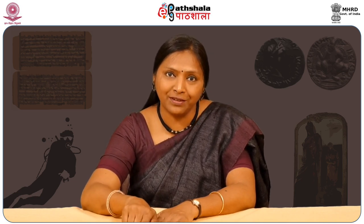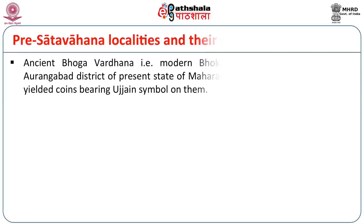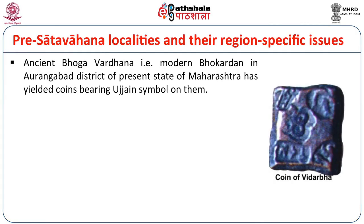Let us visit the locality of Vidarbha, which was issuing coins. The coins of Vidarbha have been minted by punching technique, which is a multiple archaic die-striking technique. One of the symbols out of the five on these coins of Vidarbha has the name of the ruler, which is very notable. So you have four symbols and the name of the ruling power rather than five symbols. Ancient Bhogavardhana, that is modern Bhokardhana in Aurangabad district of present Maharashtra, has yielded coins bearing the Ujjain symbol, which is the royal symbol of the Satavahanas.